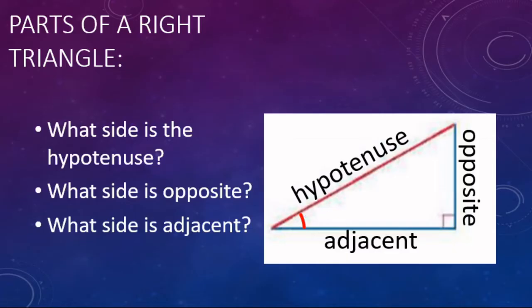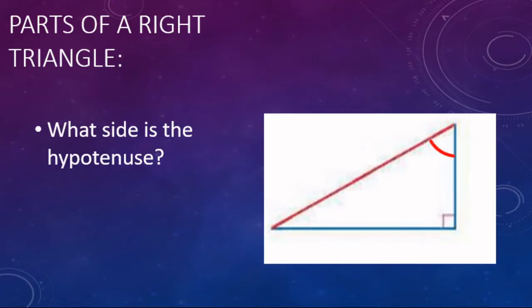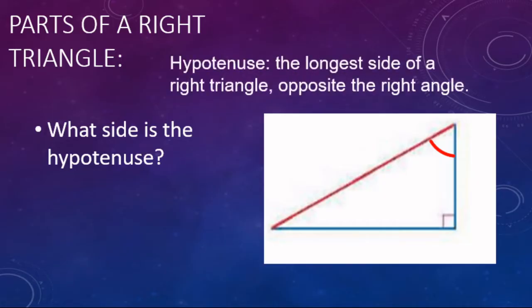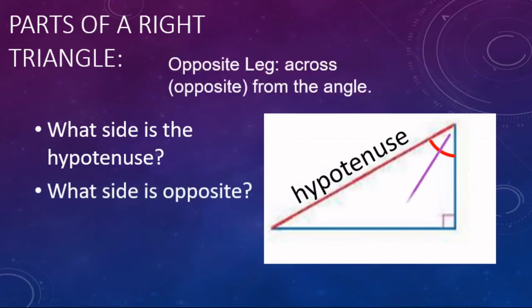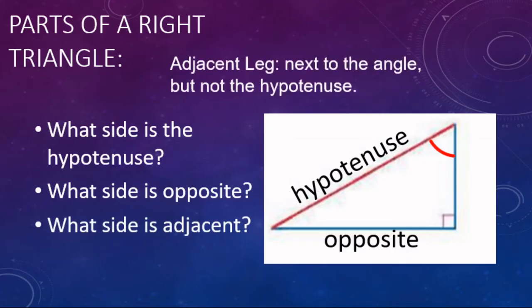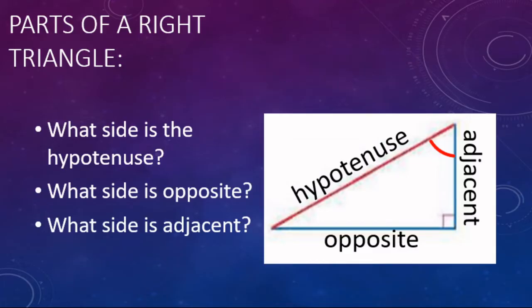Now we're going to switch from this angle to the angle up here and do the same three questions. The hypotenuse doesn't change - it's still opposite the 90 degree angle. Finding the opposite leg: that's across from the angle, the side that's not touching the angle. It moved. Next, the adjacent - the leg that's touching the angle. With right triangles, you do have to pay attention to which angle you're dealing with because the opposite and adjacent change depending on what angle you're on. Hypotenuse stays the same.